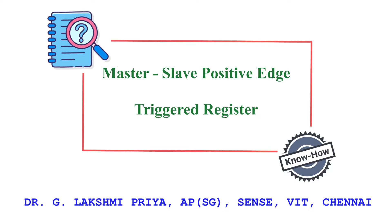Registers are typically constructed using latches, and we have seen in a previous video about implementing static latches — both positive and negative latch using multiplexers and using transmission gates. The video link is given in the description box below. Here we will see the most common approach for constructing an edge-triggered static register, which is the master-slave configuration.